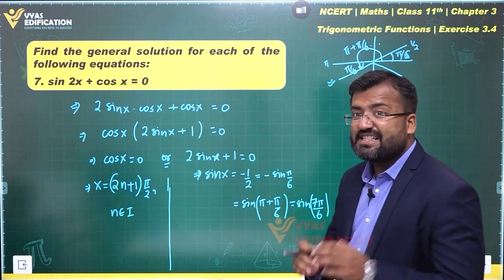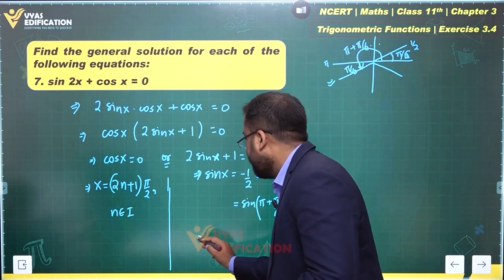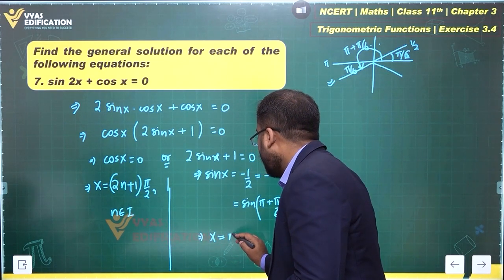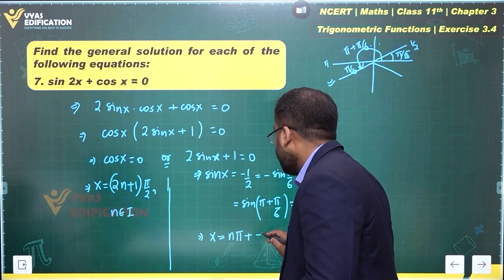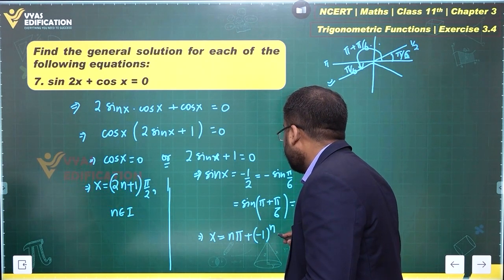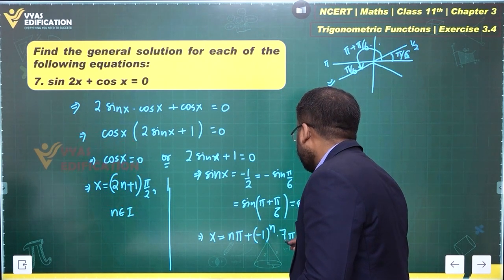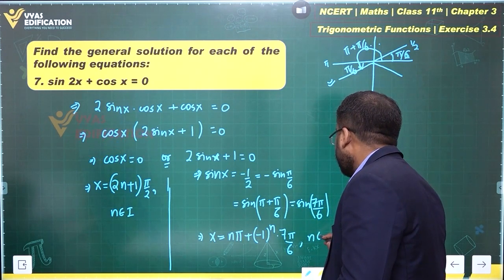So sin x equals sin 7 pi by 6 implies the general solution would be n pi plus minus 1 power n times 7 pi by 6, where n belongs to integer.